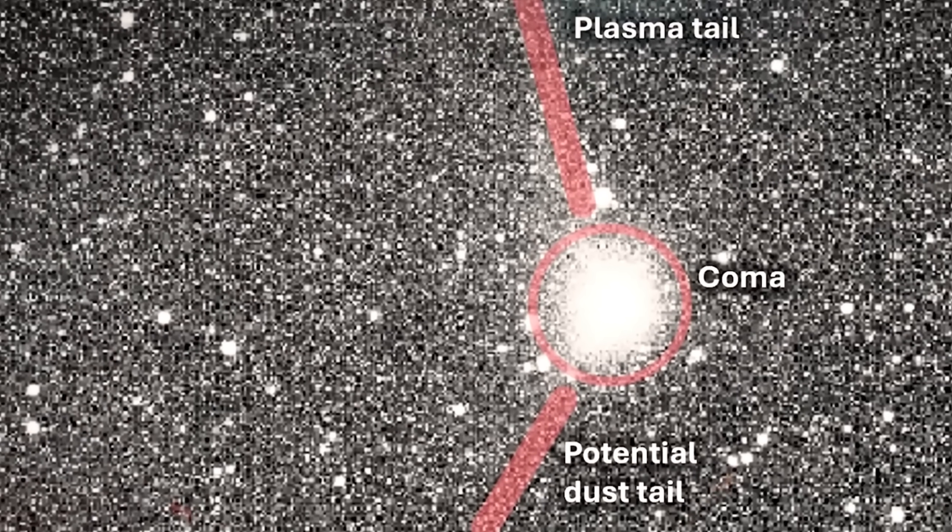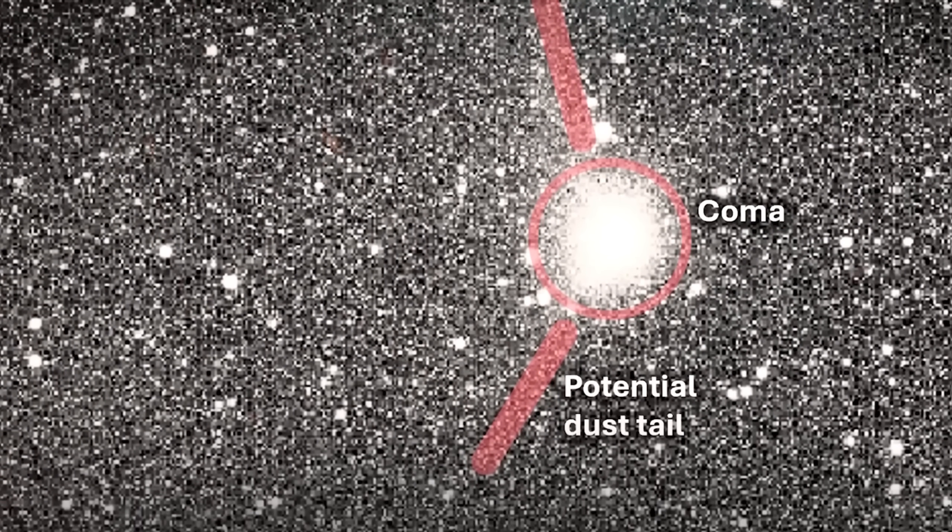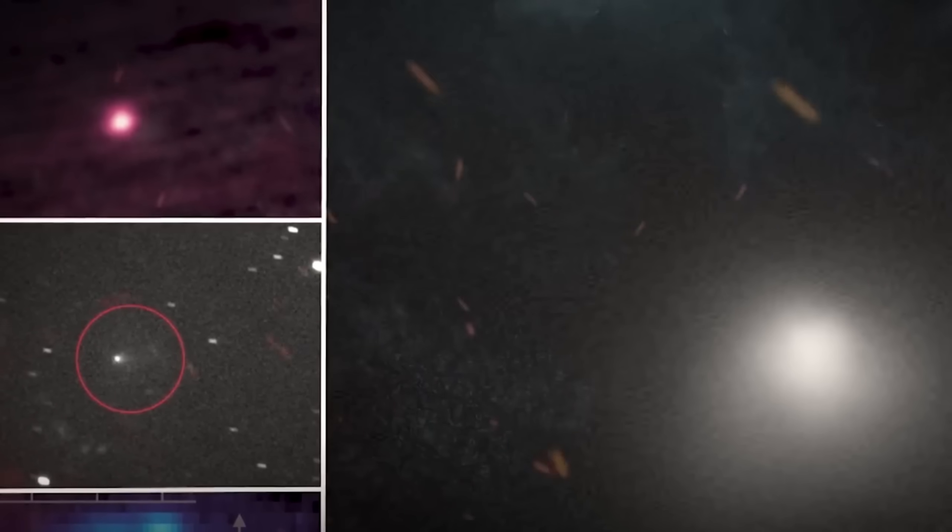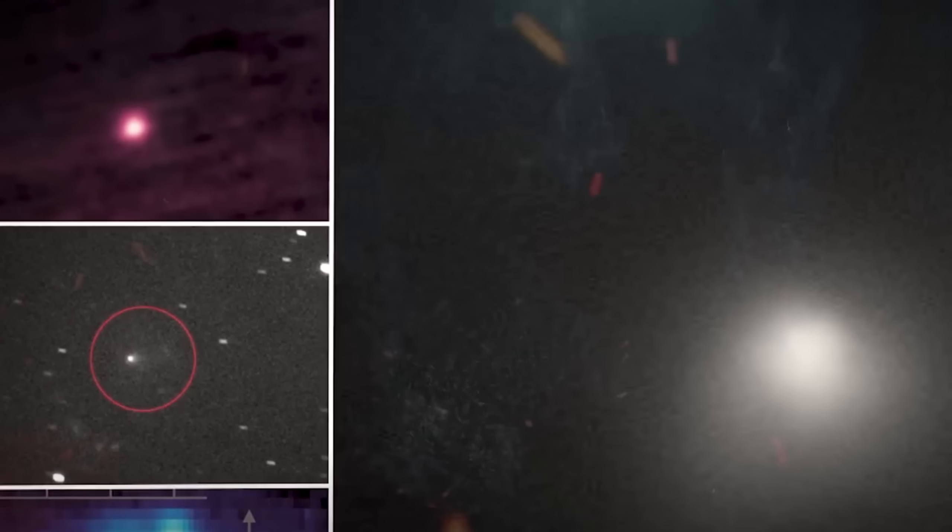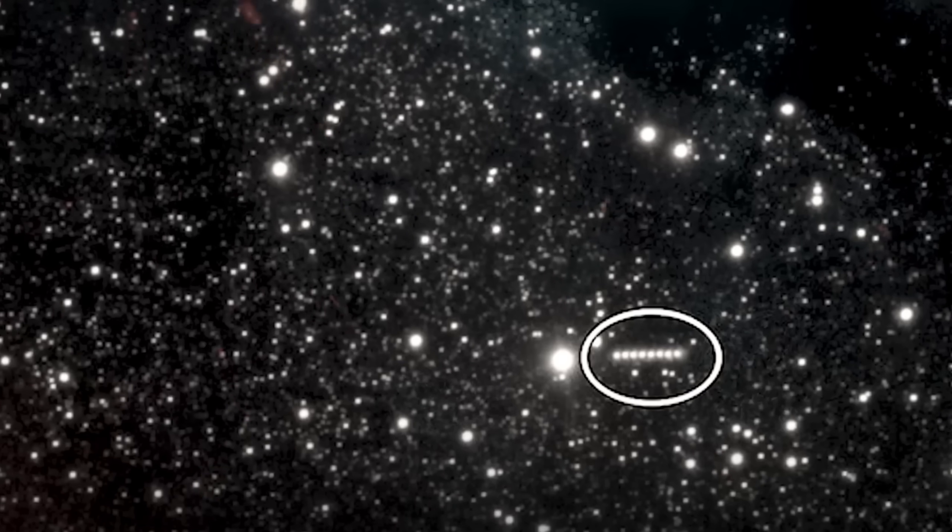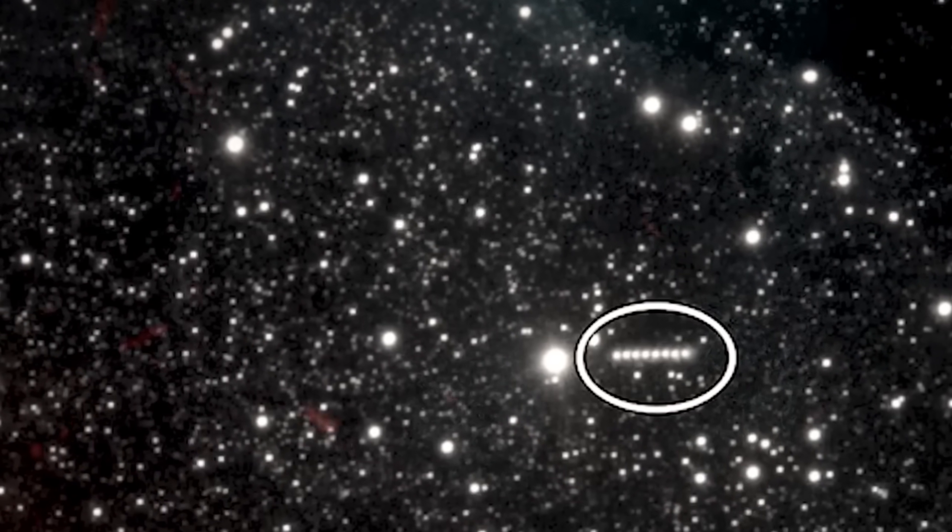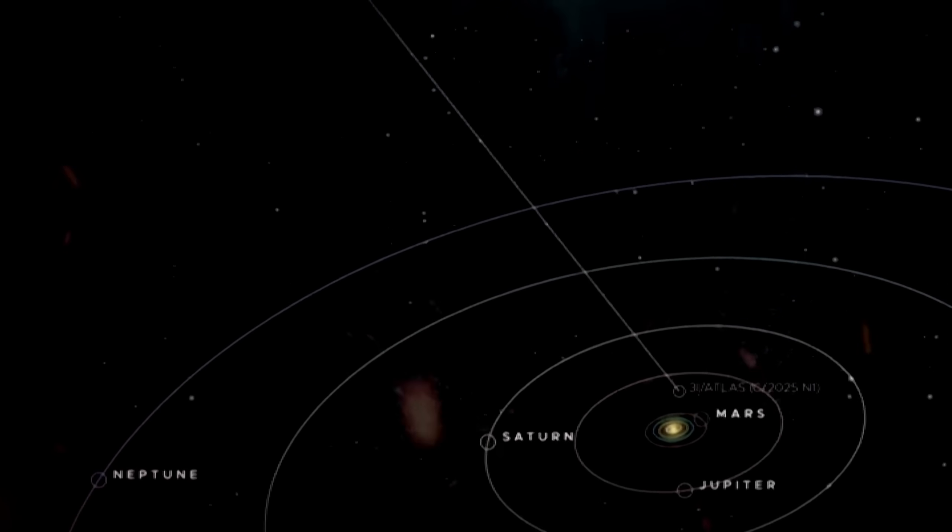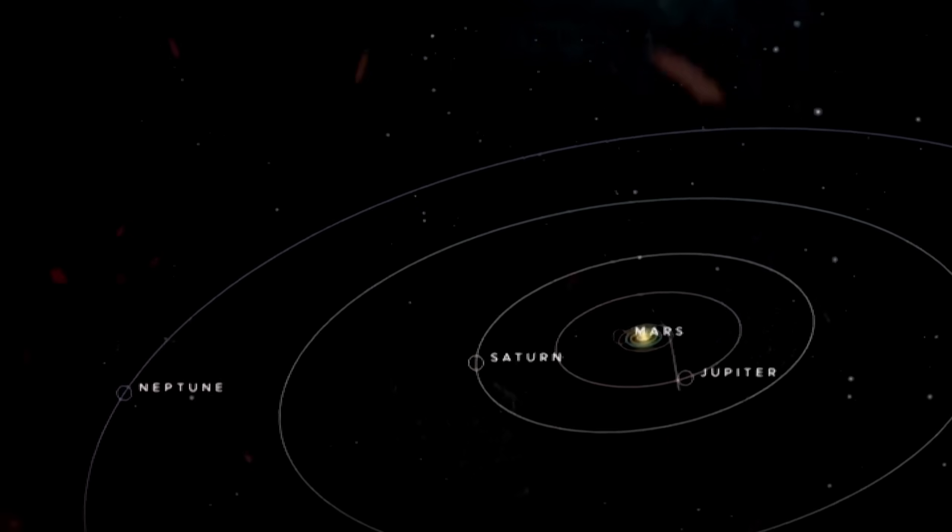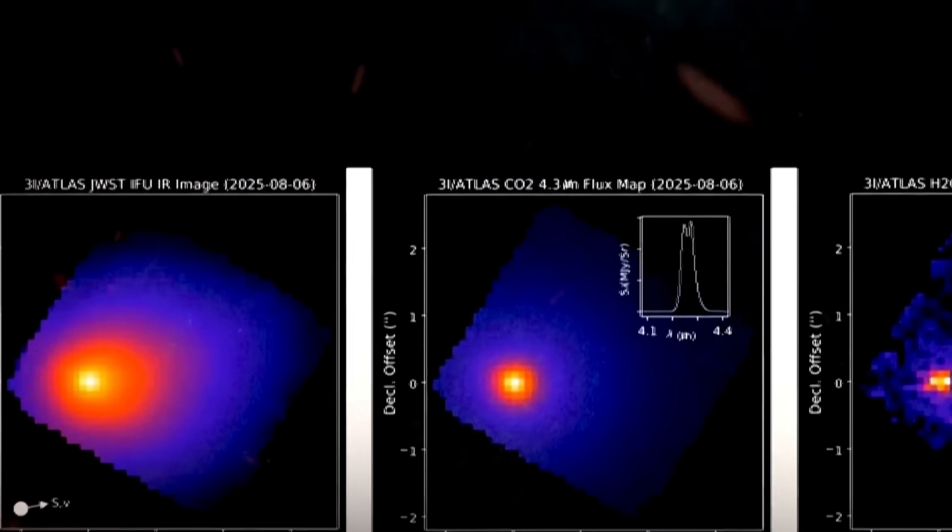Even before the new data came in, its trajectory was bizarrely perfect. Its path was aligned almost flawlessly with the ecliptic plane, the flat disk where all the planets in our solar system orbit. The chances of an interstellar object arriving with such a perfect alignment at random are just 1 in 500. It was as if it was deliberately flying down the main street of our solar system. This main street trajectory was also fine-tuned for a grand tour. Its path was calculated to take it unusually close to Jupiter, Mars, and Venus. A cosmic sightseer hitting all the major landmarks. The odds of a random trajectory allowing for so many close planetary flybys were 1 in 20,000. It was, for all intents and purposes, a statistical impossibility.